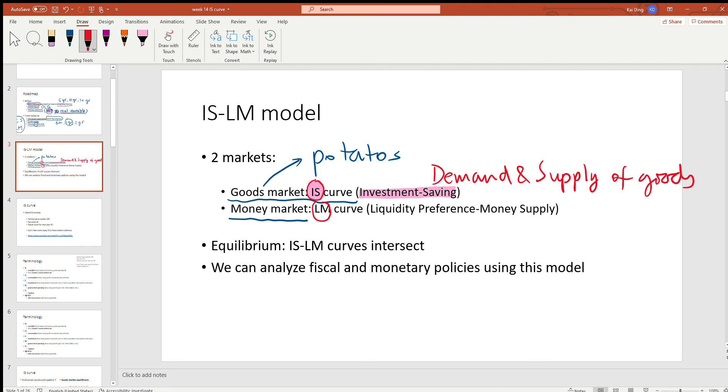On the other hand, the LM stands for M is money supply, and L is money demand. Sometimes we also call money demand a liquidity preference, because money is considered to be the most liquid asset. So the LM curve, you can also think of that as the demand and the supply of money.